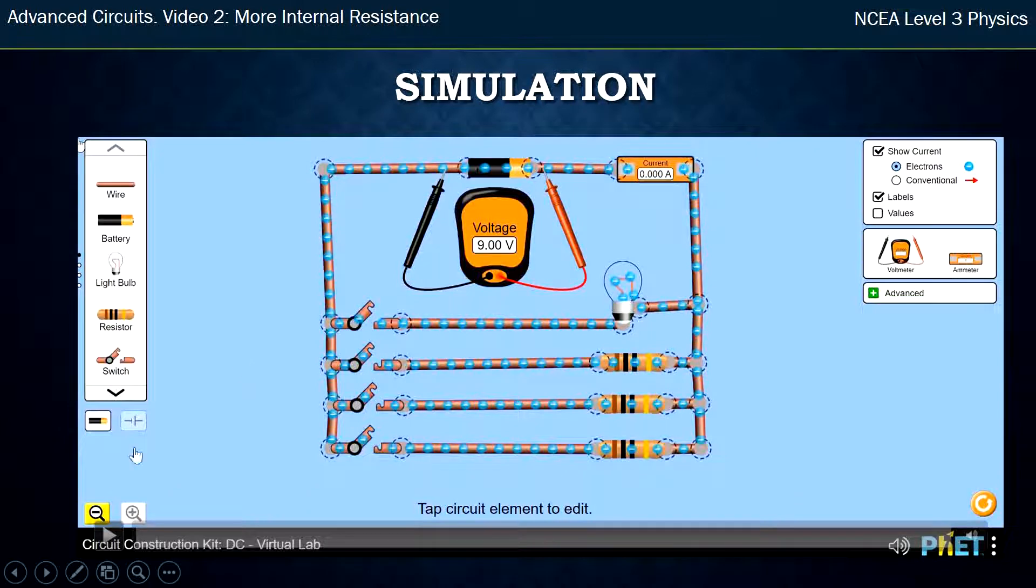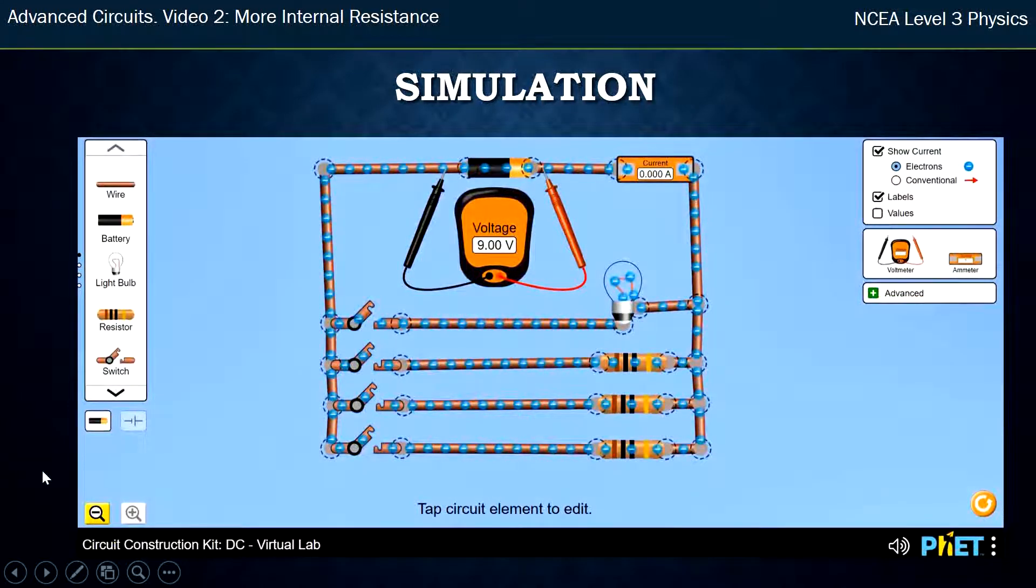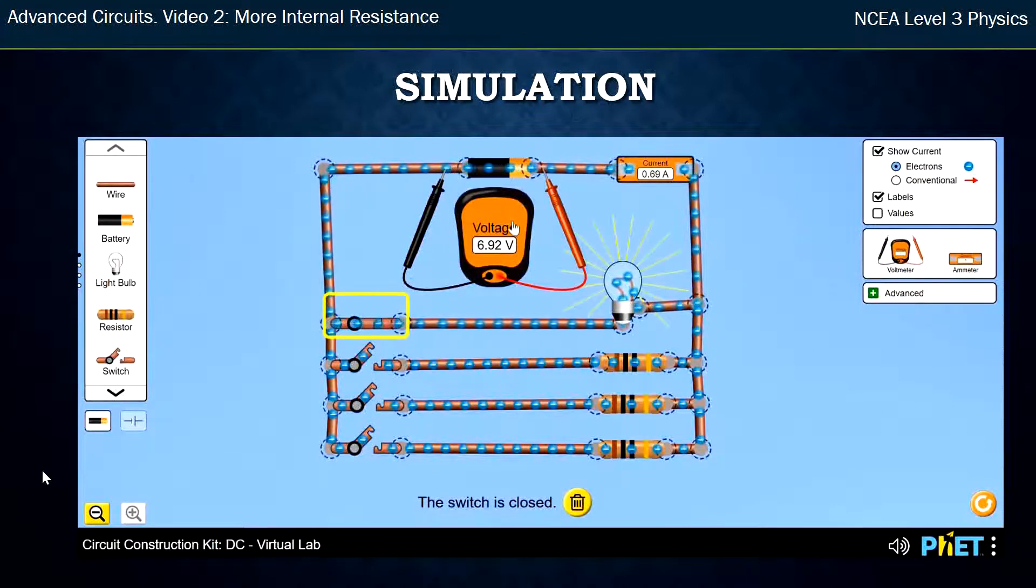So here I have a simulation that looks more complicated than last time. There's a bulb and some resistors—you don't know what resistance they are. There's a battery with internal resistance; it's not ideal. You don't know what the internal resistance is. It's an open circuit though, and so you measure at the start the 9 volts. That's the EMF—the true voltage or the proper voltage or the open circuit voltage.